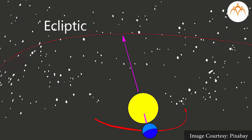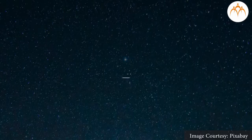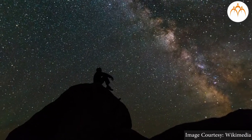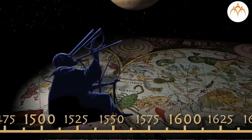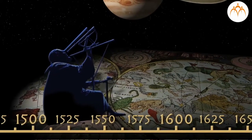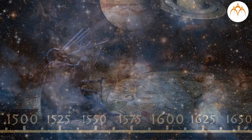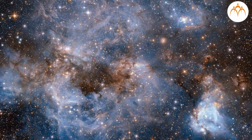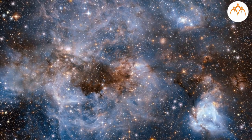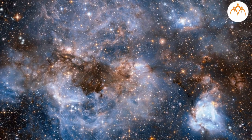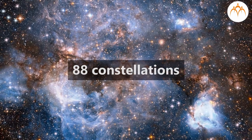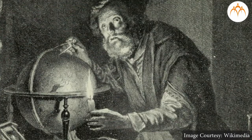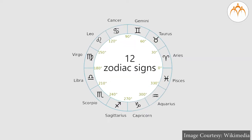The path in which the earth moves around the sun is called the ecliptic. Constellations: When we observe the sky at night, we can see thousands of stars. Astronomers have been studying the stars for hundreds of years and have found different groups of stars forming different shapes, making it easier to locate, identify, and study the stars. Western astronomers divided the celestial sphere into 88 constellations, and ancient astronomers thought of 12 zodiac signs.